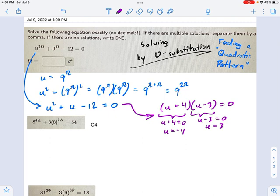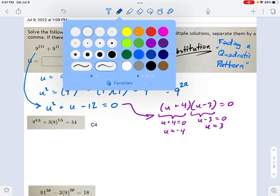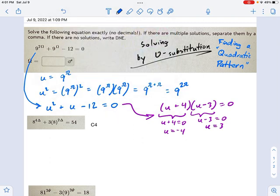Well, remember, we're not solving for u. I don't actually care what u is. I want to know what omega is. That's what I was trying to solve in the original problem. So, I switch u back to omega. And I get this: 9^ω = 3, and 9^ω = -4.